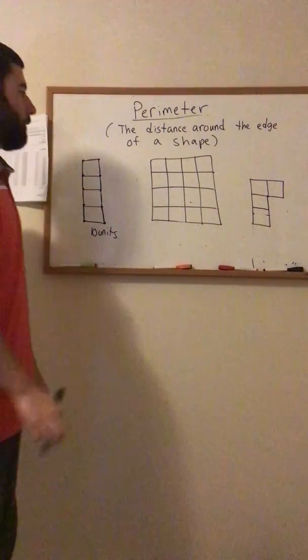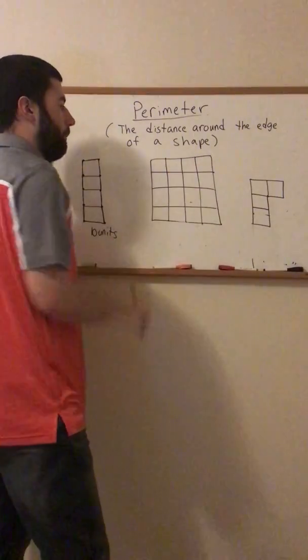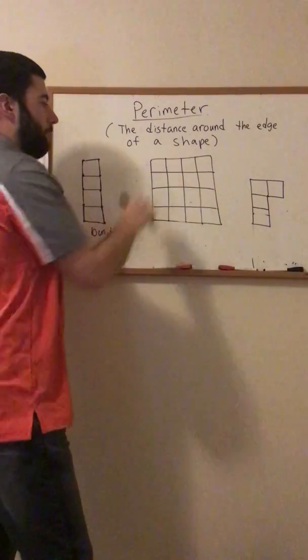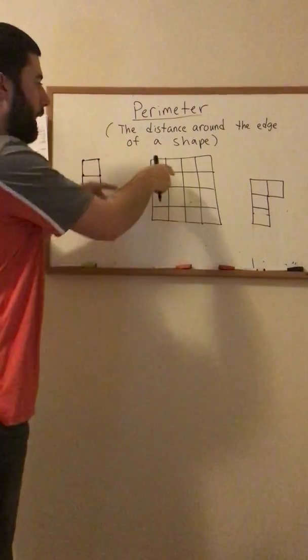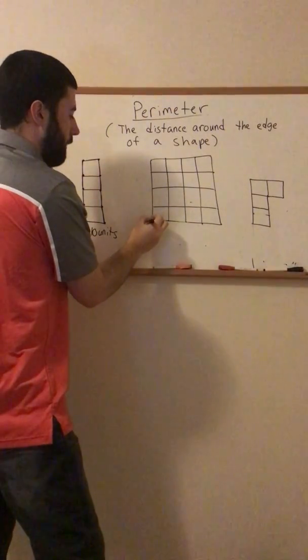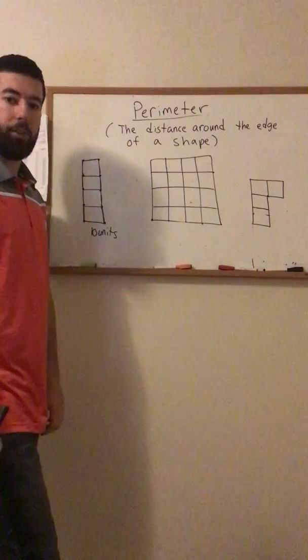My next shape. Now I have a shape with 16 different parts. So 16 separate parts. So I'm going to find again the perimeter which is the distance around the edge of the shape. So I'm going to start here in the corner. Draw my dot so I know where I am.